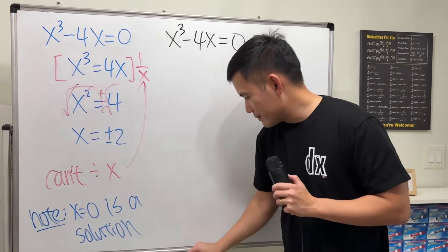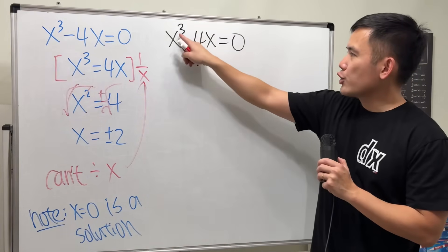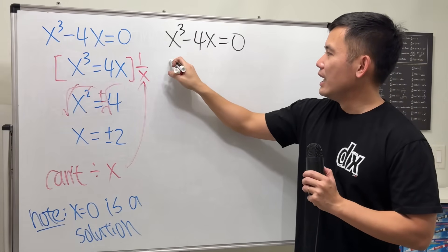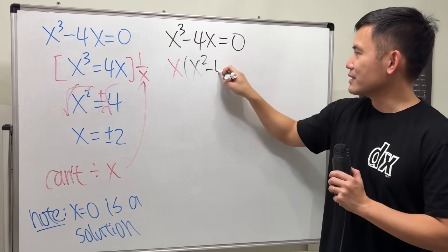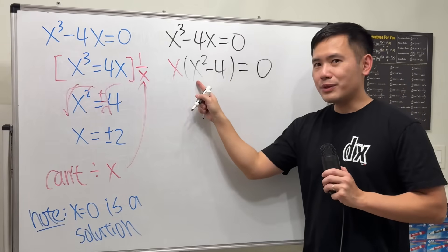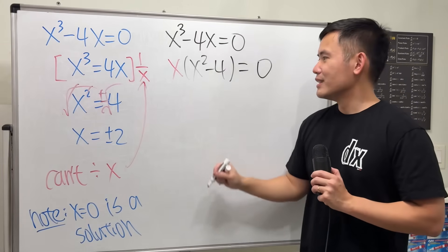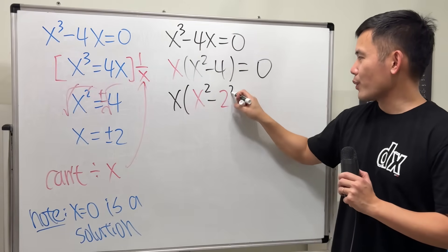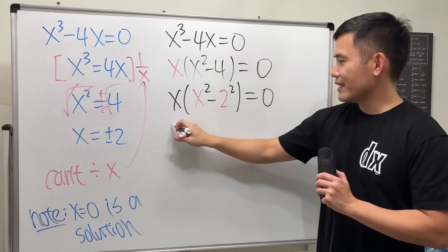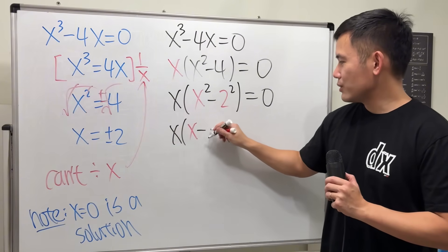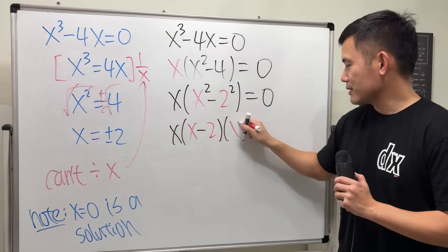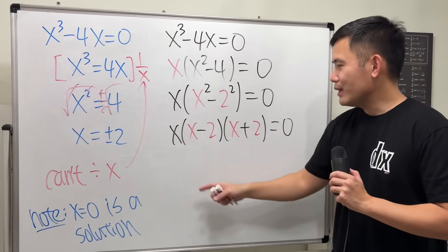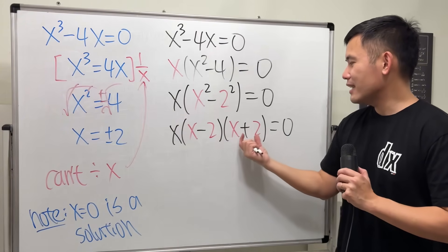Now, if you look at this approach: x cubed minus 4x is equal to 0. Try to factor it — we factor out the x, so we get x times (x squared minus 4) is equal to 0. Now this right here is a difference of two squares, so we can factor it again. x squared minus 4 is the same as x squared minus 2 squared, and using the formula we get x times (x minus 2) times (x plus 2).